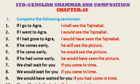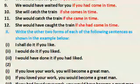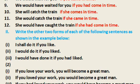Number 7: We shall wait for you if you come in time. Number 8: We would wait for you if you came in time. Number 9: We would have waited for you if you had come in time. Number 10: She will catch the train if she comes in time. Number 11: She would catch the train if she came in time. Number 12: She would have caught the train if she had come in time.